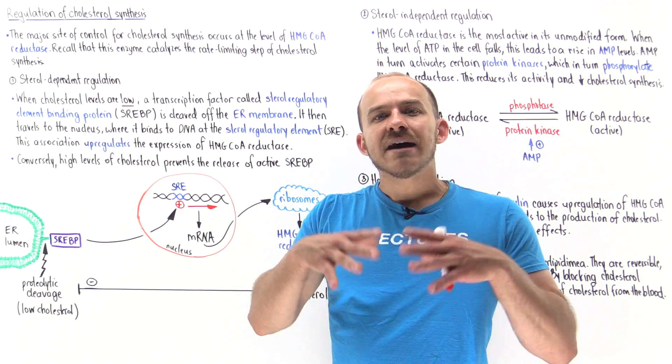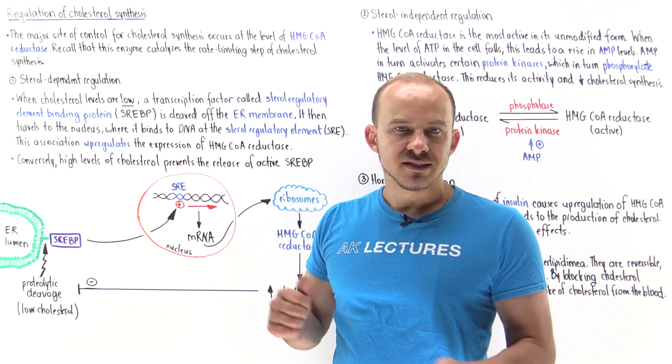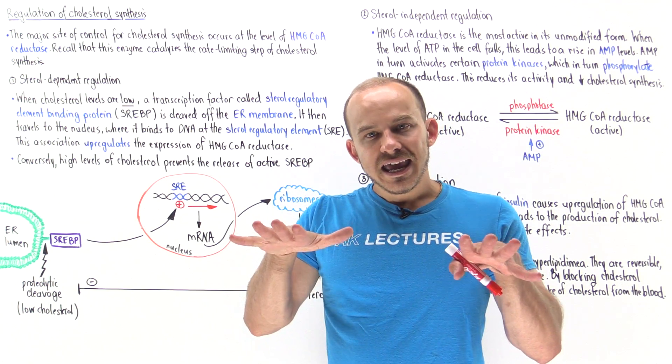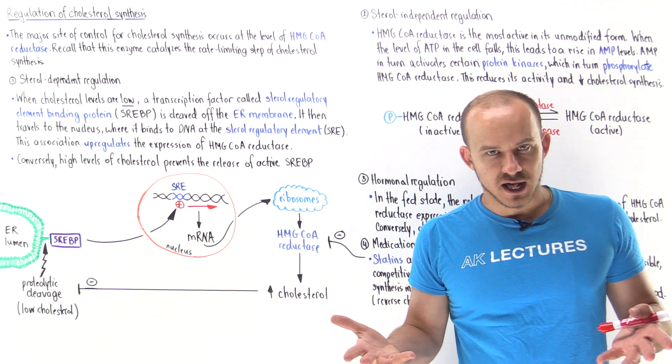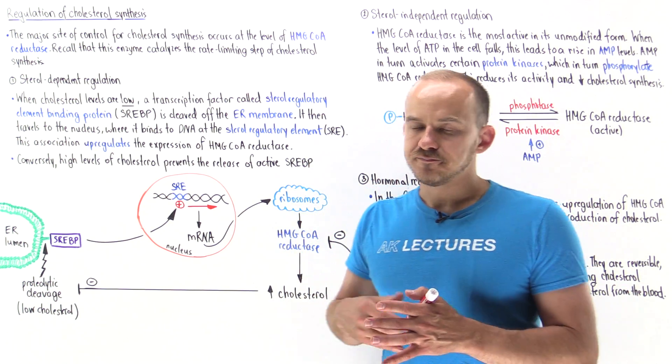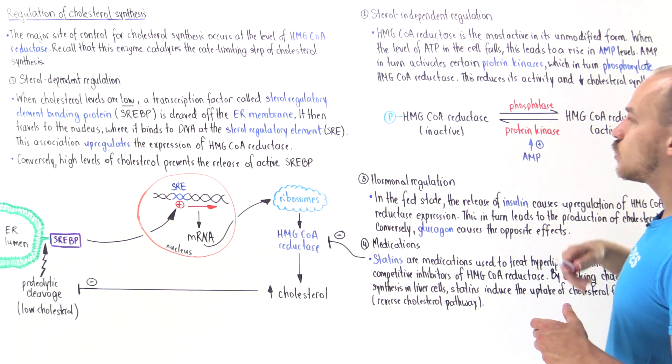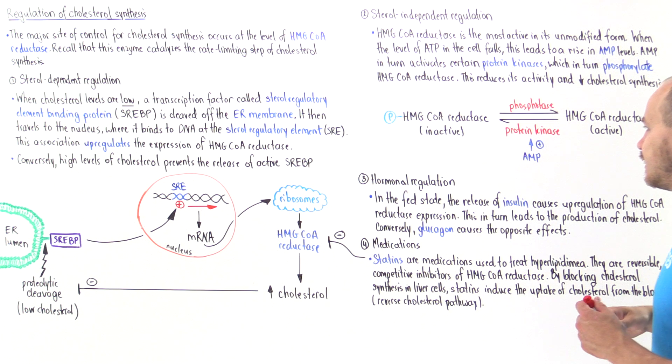If we have a lot of ATP within our cell, the cell has enough energy to synthesize cholesterol. But what happens if we decrease the supply of ATP? If we have low levels of ATP inside the liver cell, then all the ATP has been converted to AMP. AMP binds onto certain protein kinases and then activates those protein kinases.